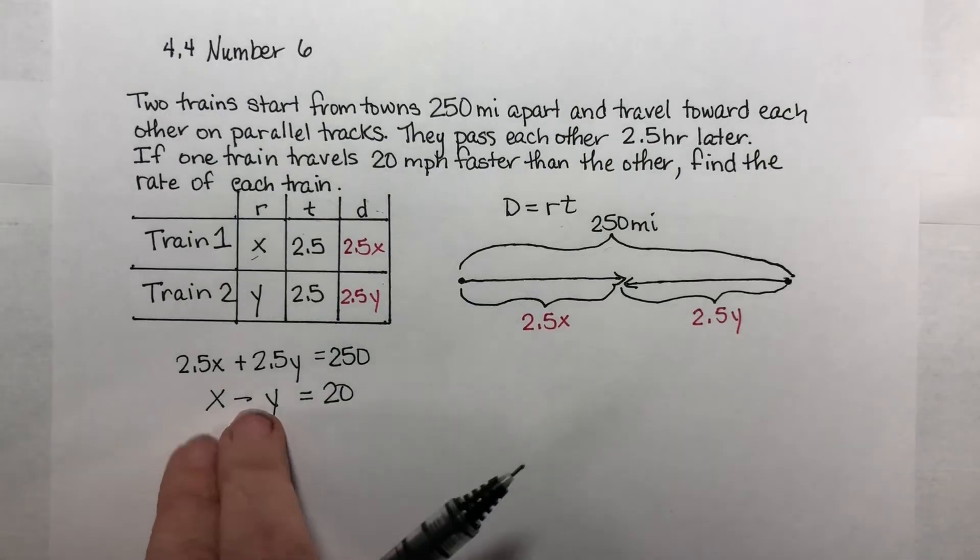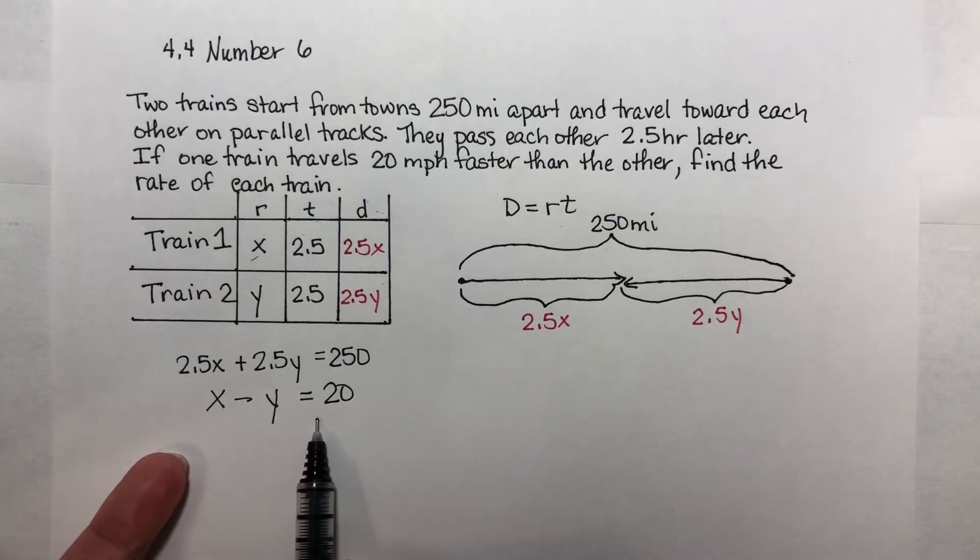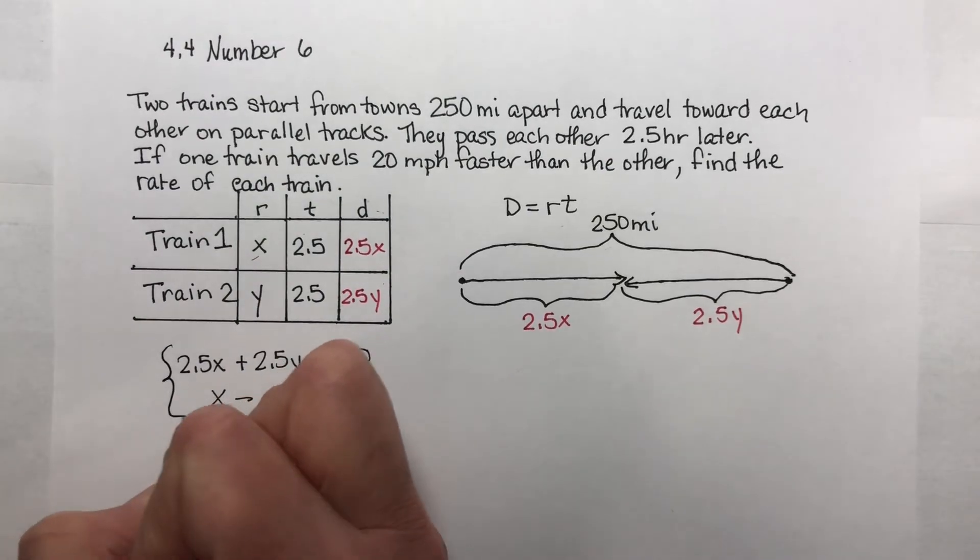Now we can do this since we weren't told which one was faster. If I was told that this one was faster, it would be in this order. If I were told that this train were faster, it would be y minus x instead. Anyway, I hope you understand that. This is what I need to solve.